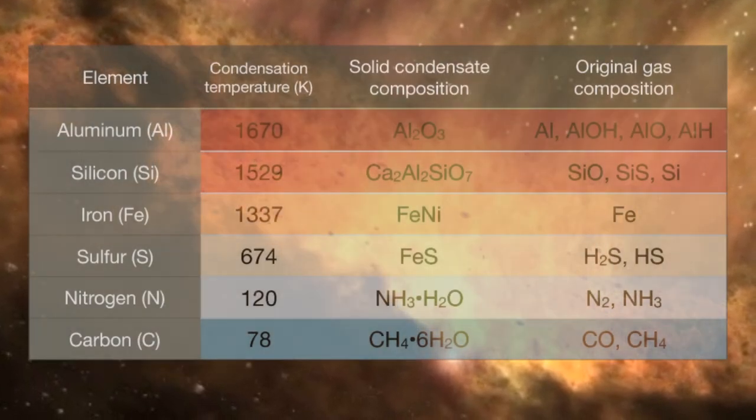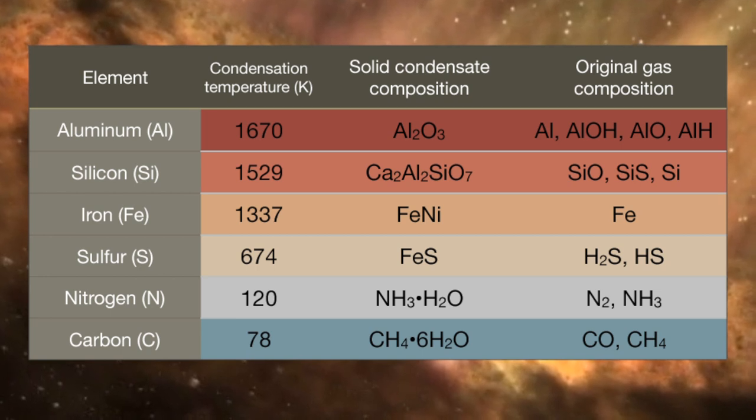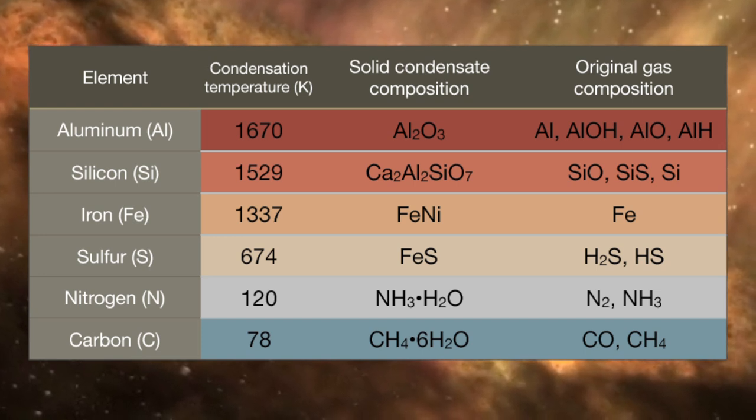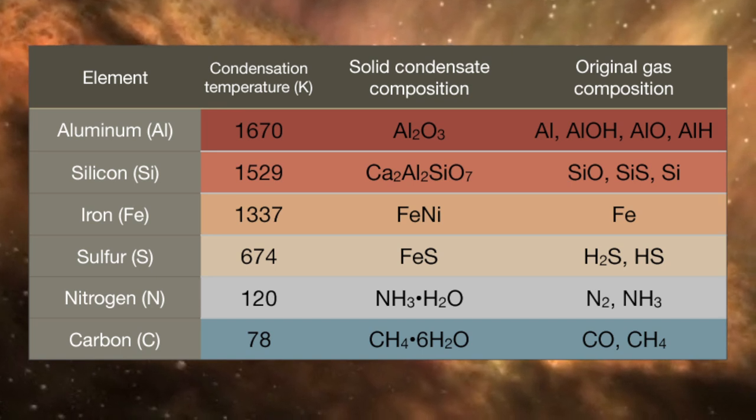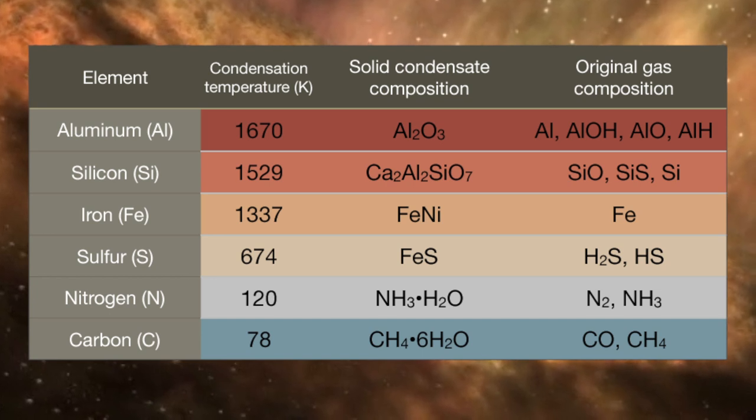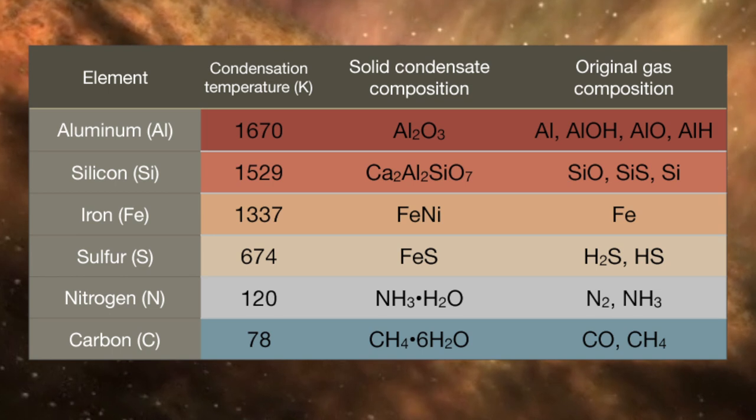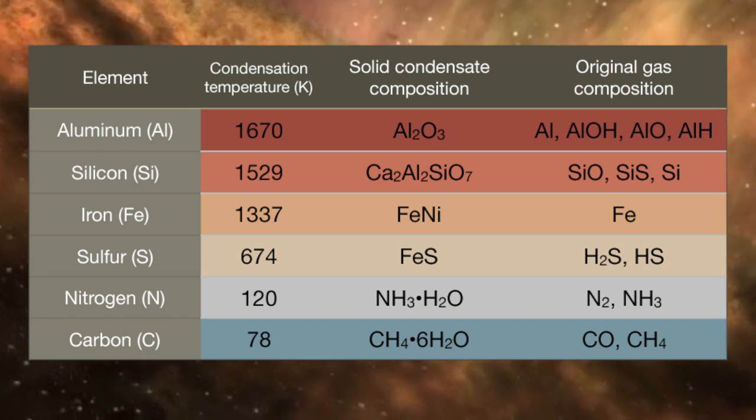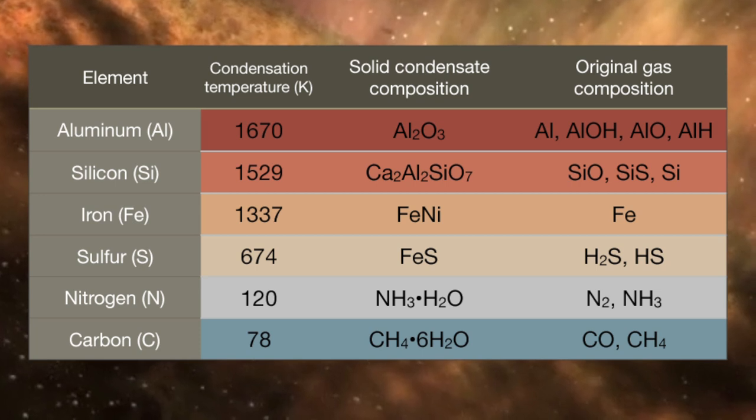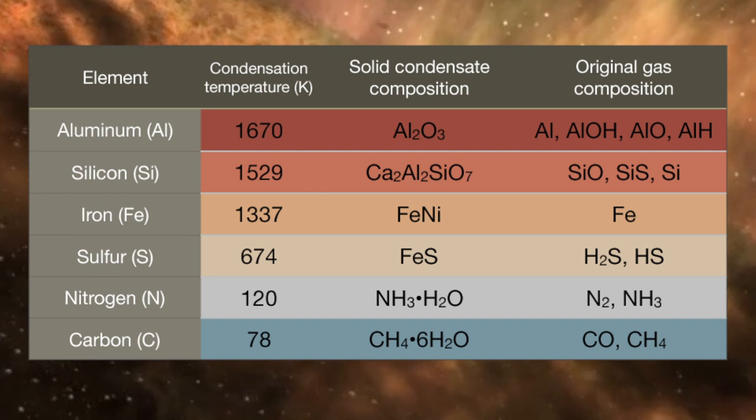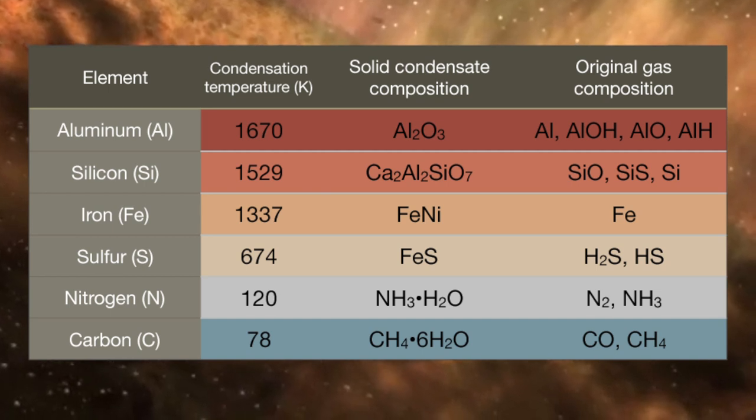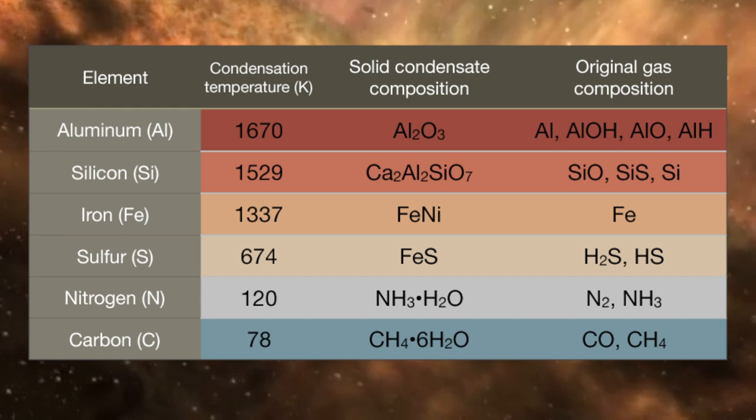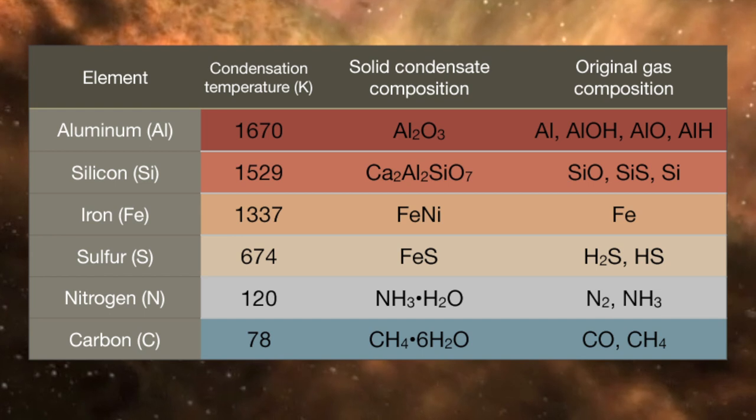These are a few example temperatures for condensation of some of the elements of the periodic table, ranging from very high condensation temperature to very low. At the top, you see things like aluminum and silicon, which would have begun in the nebula that formed our solar system as gases - aluminum, aluminum hydroxide, aluminum hydride, very simple molecules like that. And then once they condense from a gas, they condense out mostly, in this case of aluminum, as aluminum oxide, the mineral corundum on Earth. Silicon condenses out through a wide range of silicate minerals, including this calcium aluminum silicate.